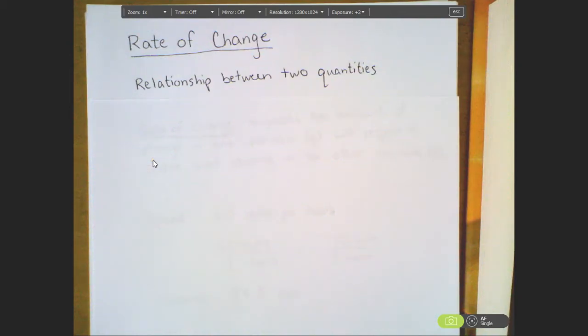I'm going to talk about rate of change. Rate of change is probably the most fundamental concept for calculus and mathematics in general. Rate of change measures the relationship between two different quantities. A quantity is any item that can be quantified, that we can put numbers onto.